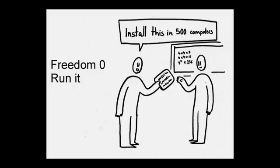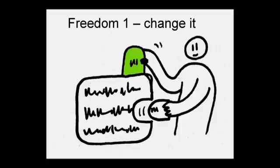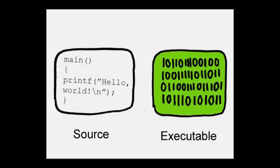Freedom zero is the freedom to run the program as you wish for whatever purpose. Freedom one is the freedom to study the source code of the program and change it so it does the computing you want it to do. But what is the source code?